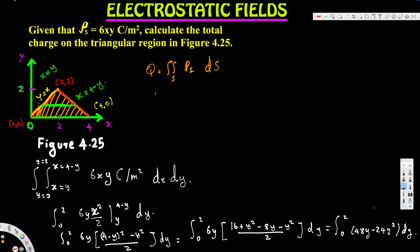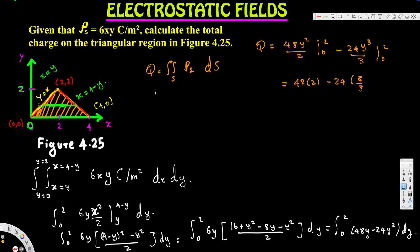Now we do the outer integration with respect to y. We get 48y² divided by 2, evaluated from 0 to 2, minus 24y³ divided by 3, evaluated from 0 to 2. Plugging in the values: 48 times 4 over 2 minus 24 times 8 over 3, which gives 96 minus 64, equal to 32 coulombs. So the total charge is 32 coulombs.